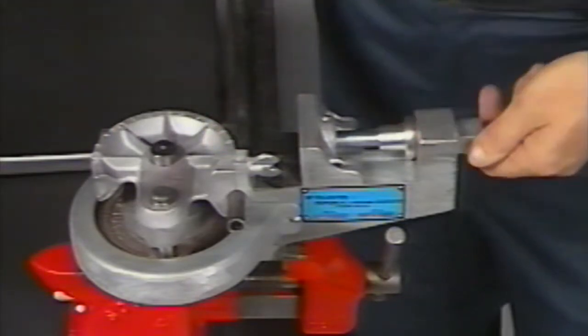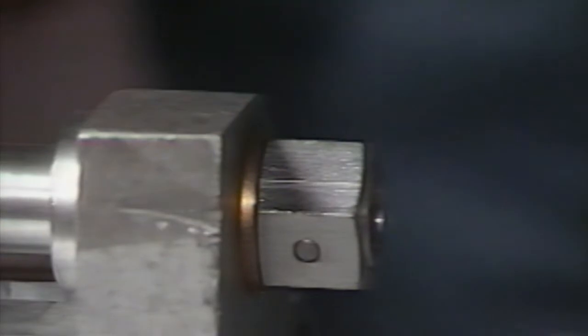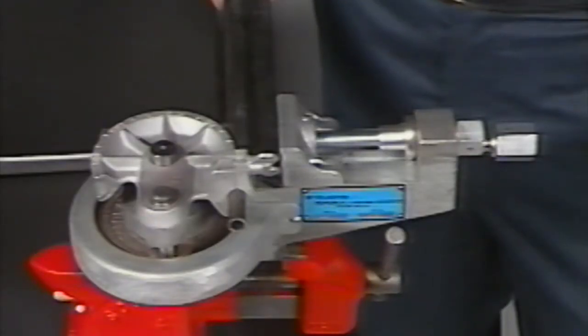Turn the clamp nut clockwise to engage slide block and finger tighten only to allow the slide block to follow the tubing and support the OD of the tube during the bending. A film of grease on the tubing will help ease sliding. Turn the drive nut clockwise to engage the worm gear drive mechanism.